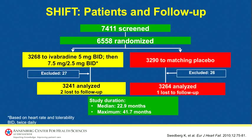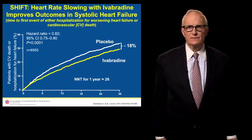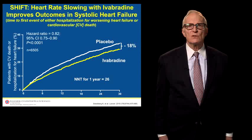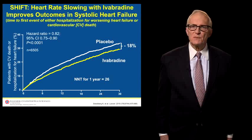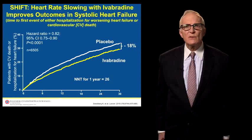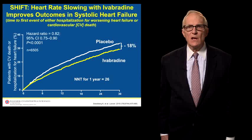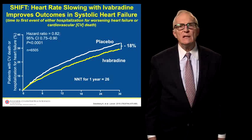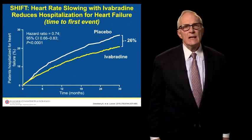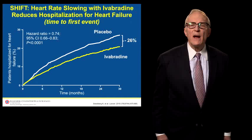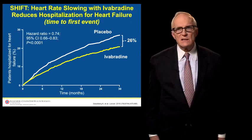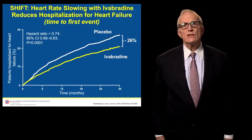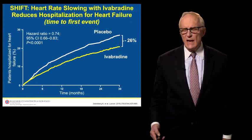The outcomes of SHIFT were rather clear — heart rate slowing with Ivabradine improved the outcomes in patients with systolic heart failure. In a time-to-first event analysis for either hospitalization or worsening heart failure or cardiovascular death, there was an 18% reduction in events over two and a half years when Ivabradine was given to patients rather than placebo. The number needed to treat for one year to see this benefit was 26 patients. This marked improvement was driven primarily by a reduction in hospitalizations for heart failure — a 26% reduction in patients treated with Ivabradine versus placebo — a highly statistically significant result.